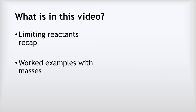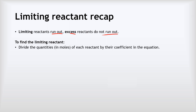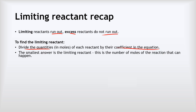In this video we're going to quickly recap what we mean by limiting reactants and then work through three different worked examples using the masses of substances. To recap: limiting reactants are the reactants that run out in a chemical reaction, whereas excess reactants are ones that do not run out. To find the limiting reactant, we divide the quantities in moles of each reactant by their coefficients in the equation, and the smallest answer is the limiting reactant.